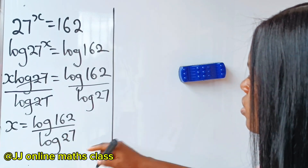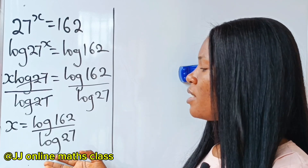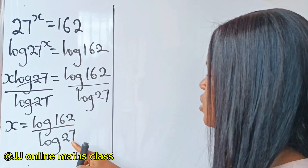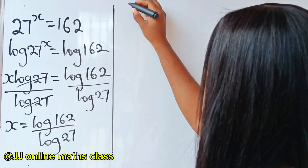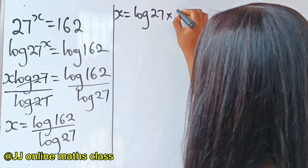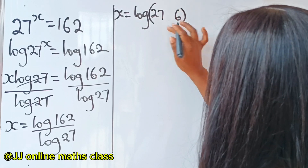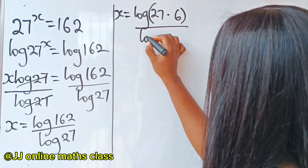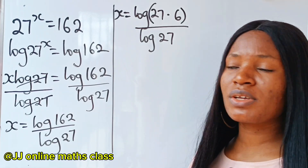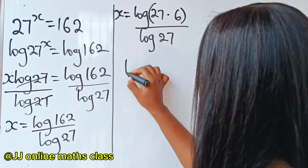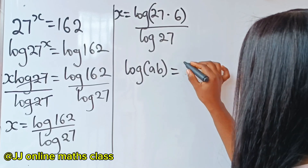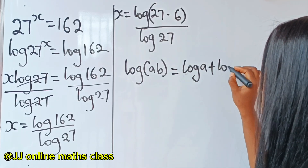Now we are going to simplify this further — we can't just leave it as is. To do that, we express log 162 in terms of log 27. We can write 162 as 27 multiplied by 6, so x is equal to log of 27 multiplied by 6, all divided by log 27. Recalling our logarithmic law: log(a × b) = log a + log b.